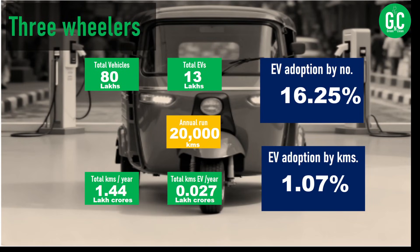For three-wheelers, there are about 80 lakh three-wheelers in India, of which 13 lakhs are EVs — a very good figure. This makes the EV adoption rate by number an impressive 16.25%. However, considering 20,000 kilometers run annually by three-wheelers, the EV adoption rate by kilometers is only 1.07%. So even though 16% of three-wheelers are EVs, they account for just about 1% of kilometers driven in India.